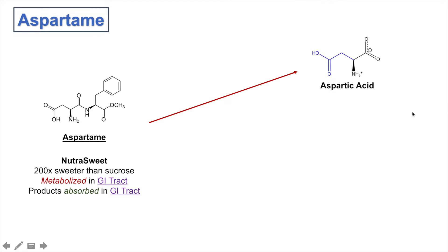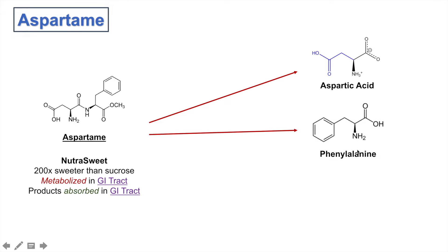Another portion of aspartame that gets released is phenylalanine. Phenylalanine is an amino acid, and you can see that this structure here is phenylalanine. Phenylalanine is important because individuals with phenylketonuria have difficulties metabolizing it, so it's important to know that phenylalanine is a product of aspartame metabolism.